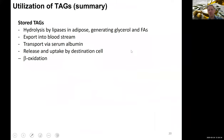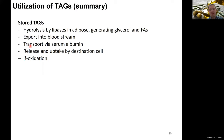To summarize: for stored TAGs, we start with hydrolysis by lipases in adipose tissue, generating glycerol and fatty acids, which are exported into the bloodstream and transported via serum albumin. At the destination cell, free fatty acids are released, taken up, and undergo beta-oxidation.